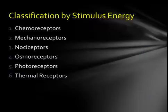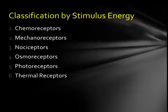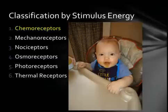Receptors may also be classified into six main types based on the type of stimulus they detect. Chemoreceptors detect chemicals in the body such as oxygen in the bloodstream, odorants in the nose, or chemicals in the food you eat.